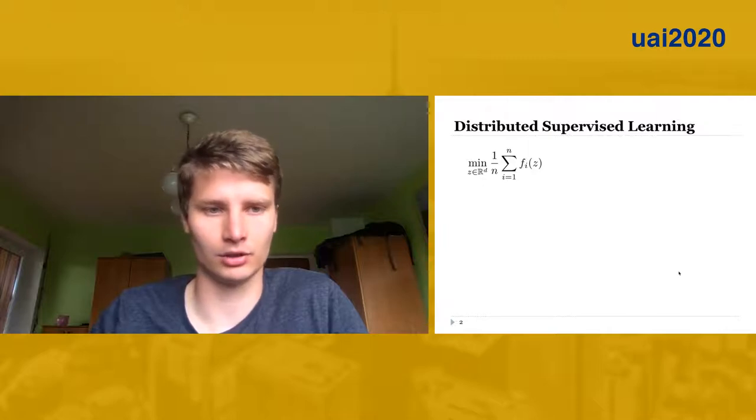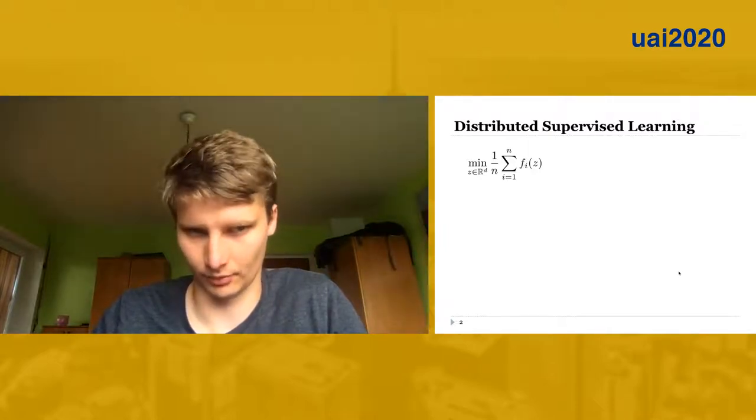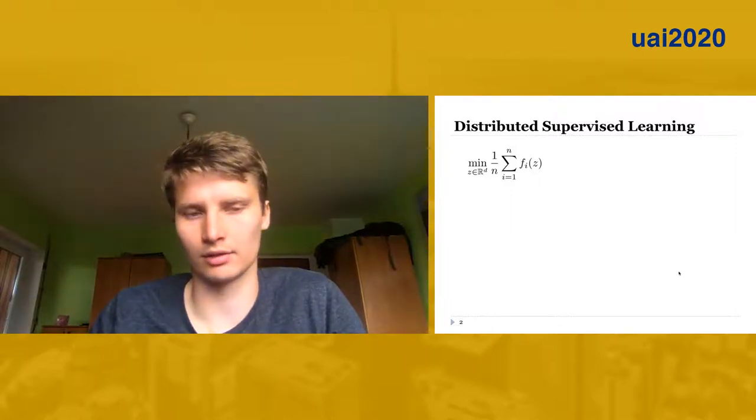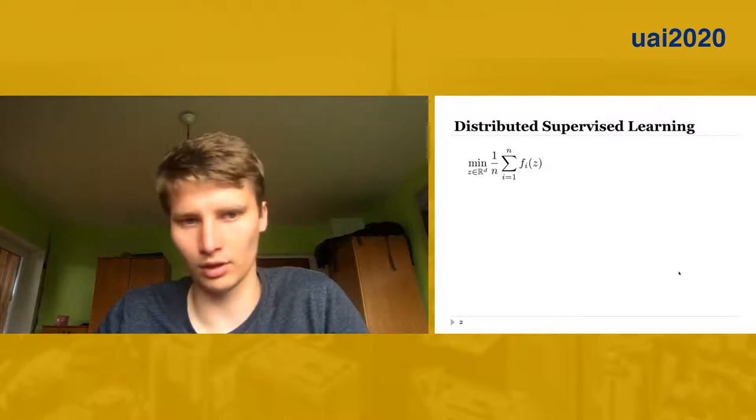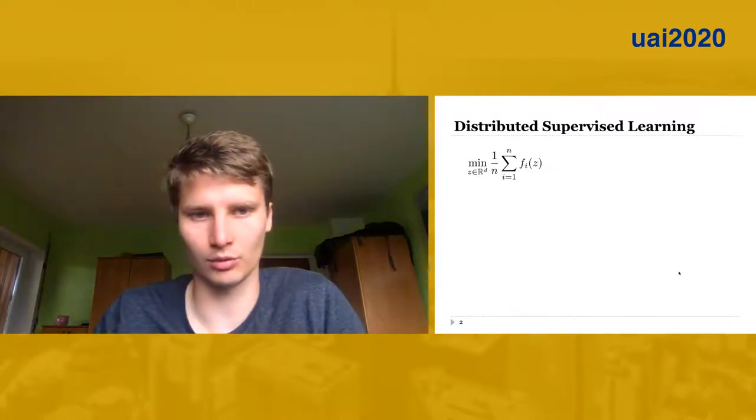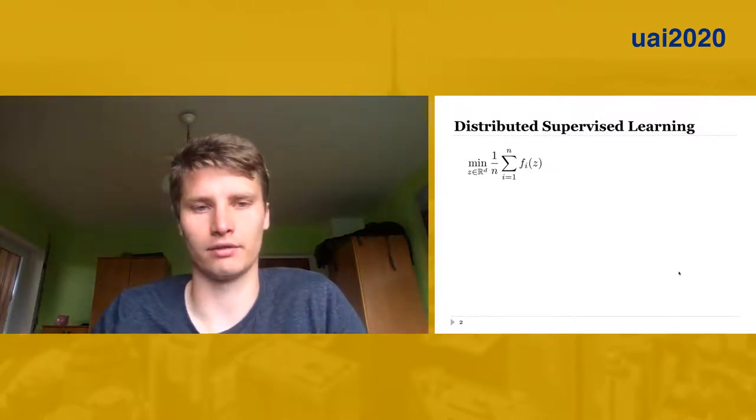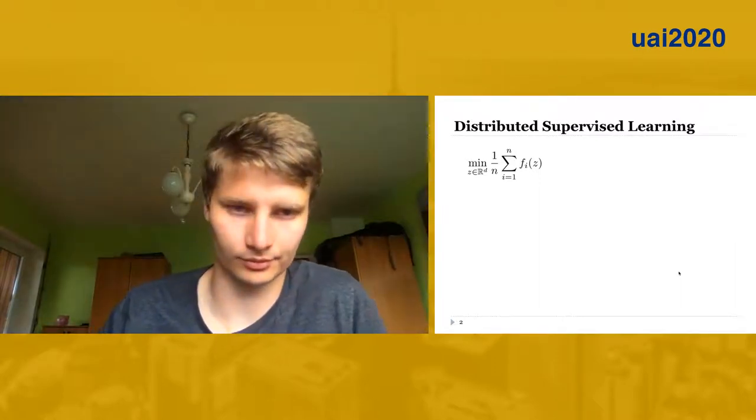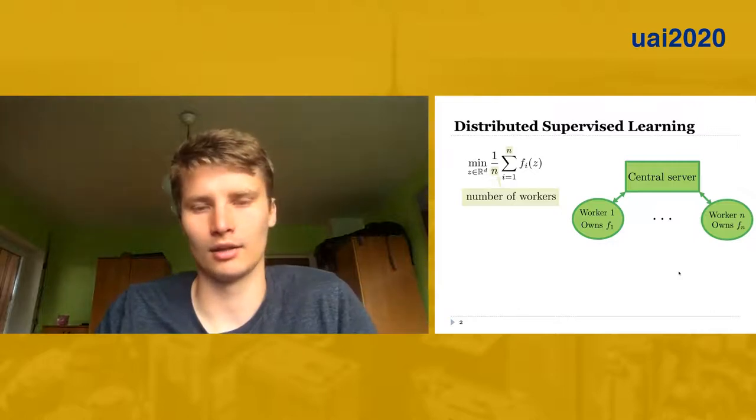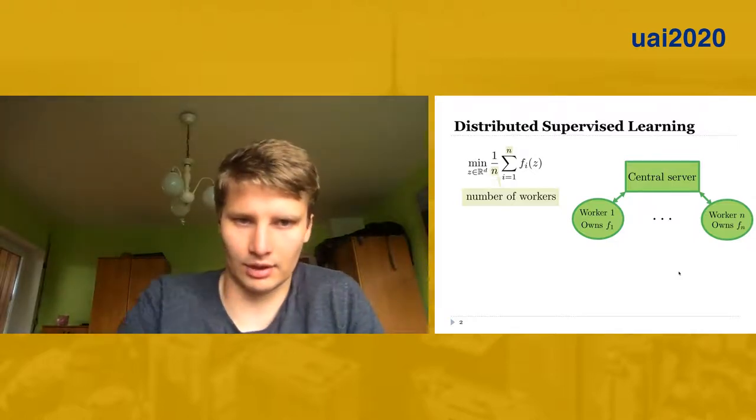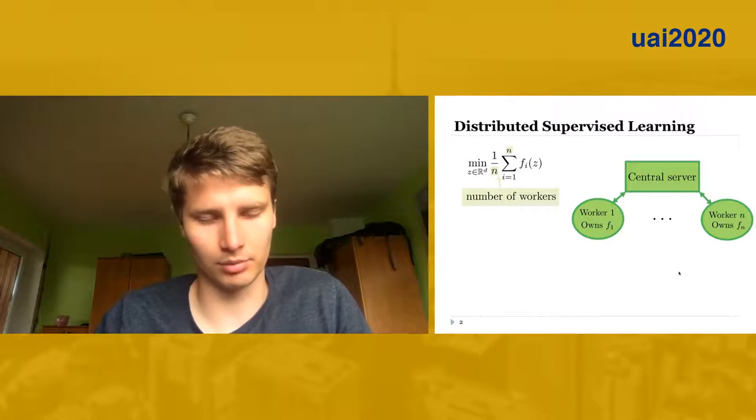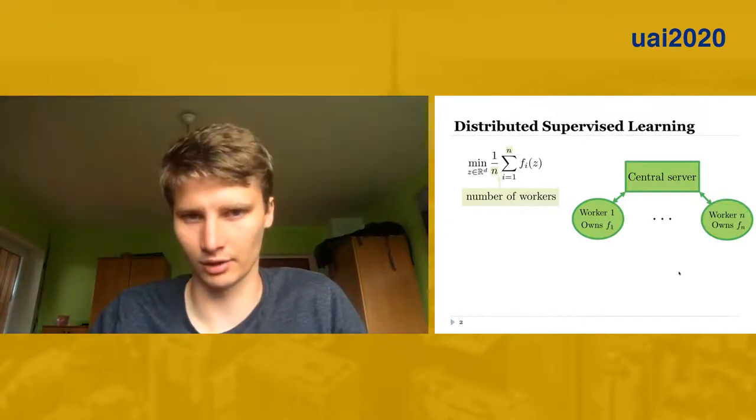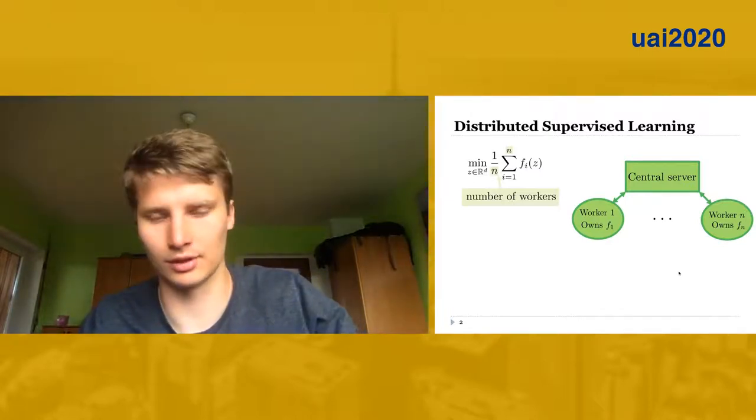One can think of z as the model or parameters of some machine learning model, and fi's or functions fi correspond to the data. However, n or the number of those fi's is not really the number of data points, but rather n is the number of workers in our distributed system.